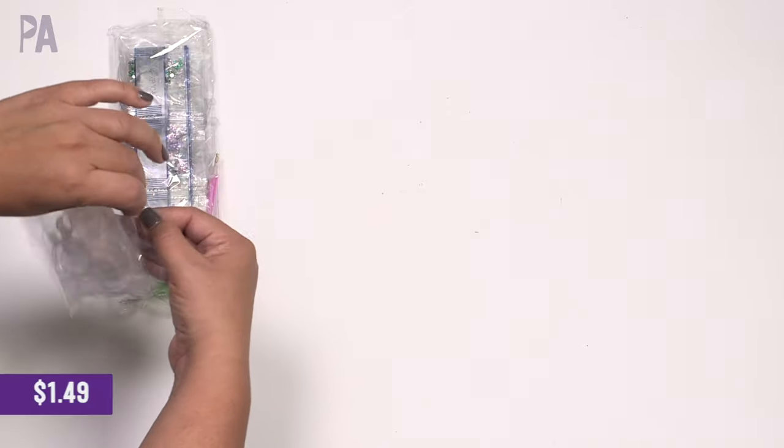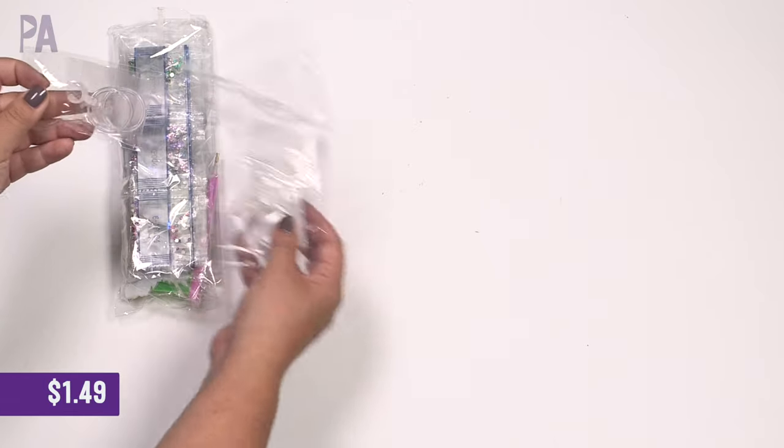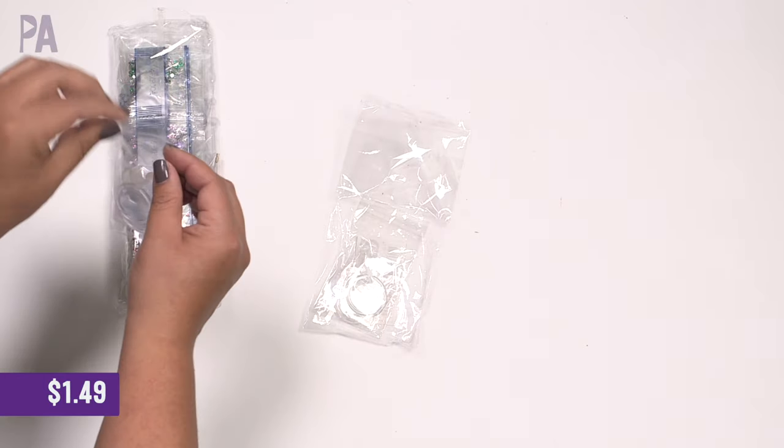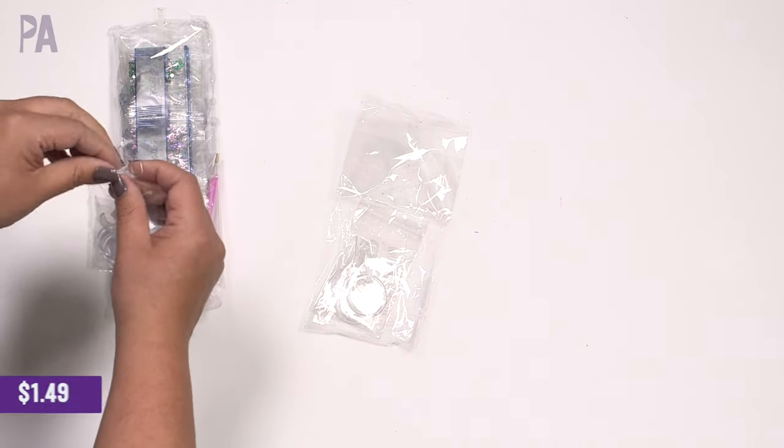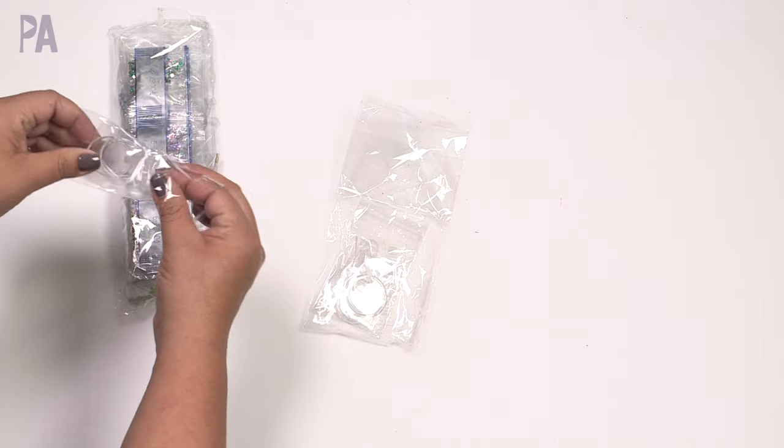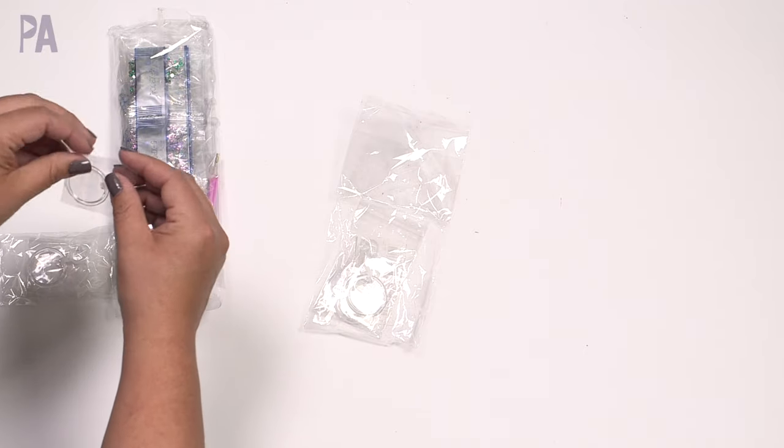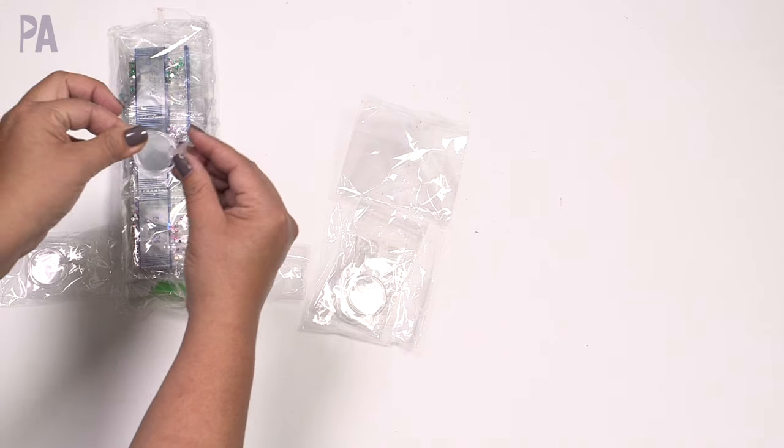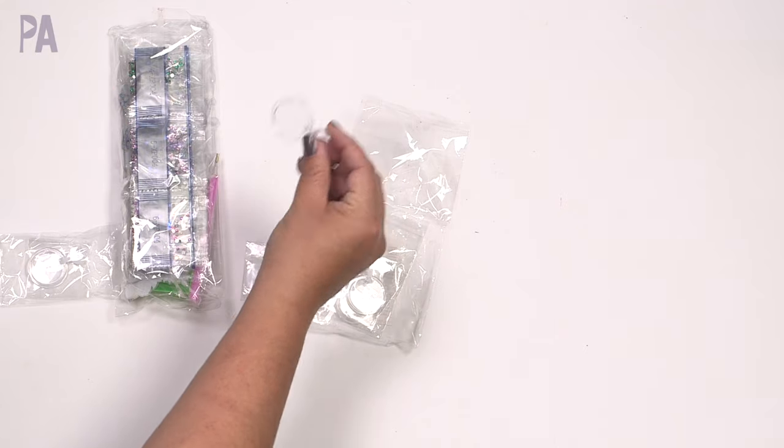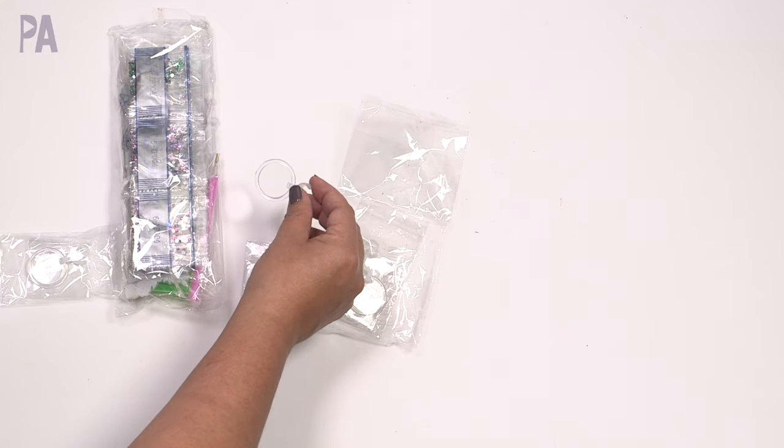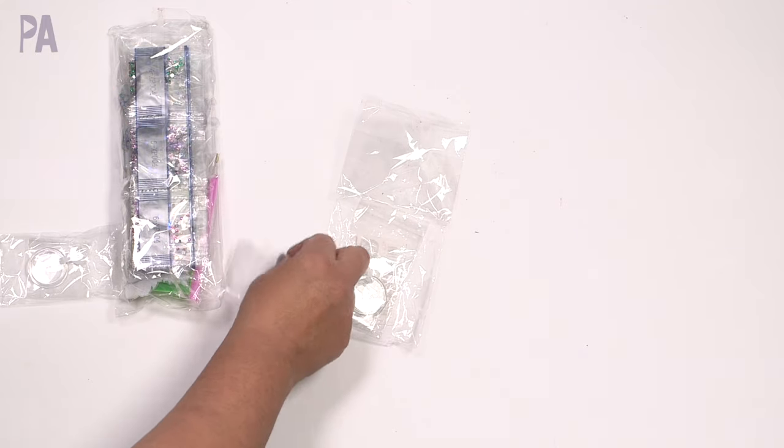These little guys are meant to go on the diamond painting pens as a magnifying glass. And I haven't tried them, but I just saw them and I got curious. So if you are like me and are getting older and have eyesight issues, then this clips onto the pen, a little magnifying glass that will clip onto the pen. And you can see all the symbols on the diamond painting a little bit better as you are actually diamond painting.